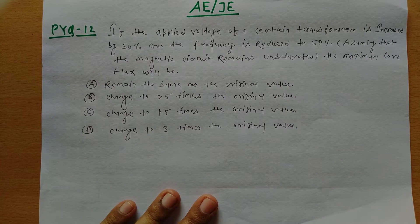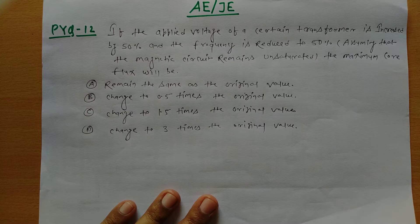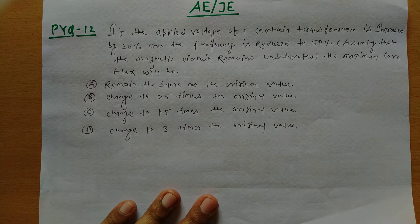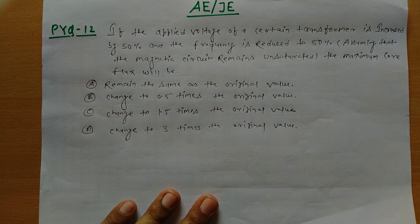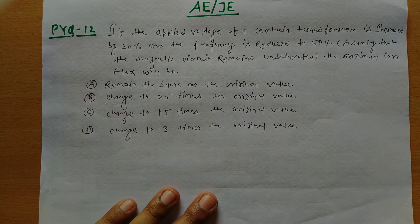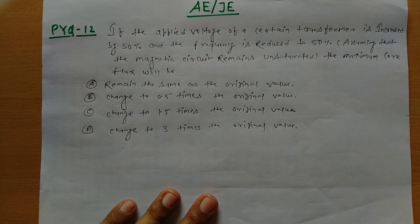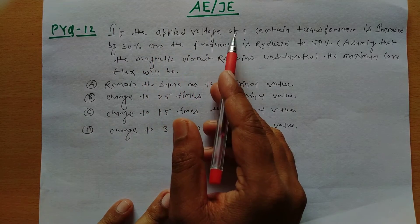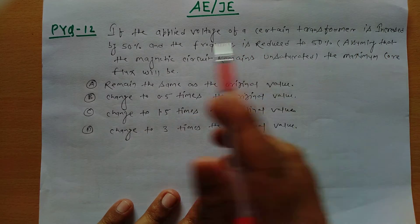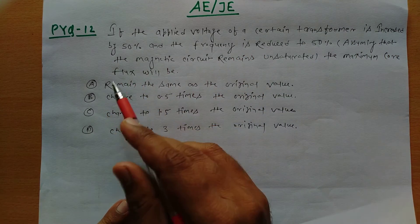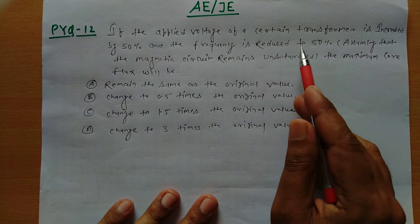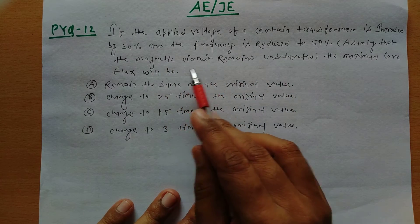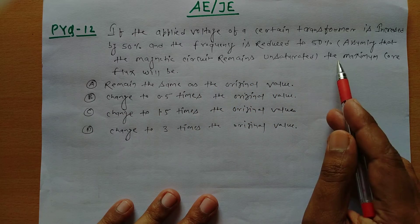Hello everyone, so in the series of PYQ questions, in today's video I have taken a very good conceptual theoretical question. Now we'll see PYQ number 12: If the applied voltage of a certain transformer is increased by 50 percent and the frequency is reduced to 50 percent, assuming that the magnetic circuit remains unsaturated, the maximum core flux will be...